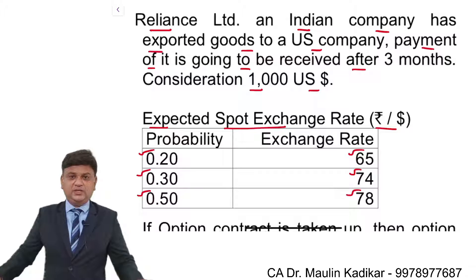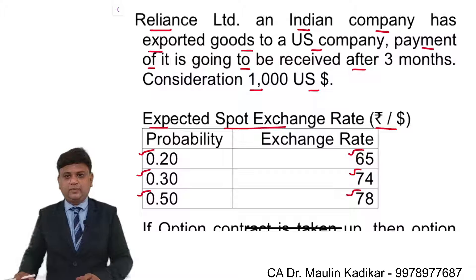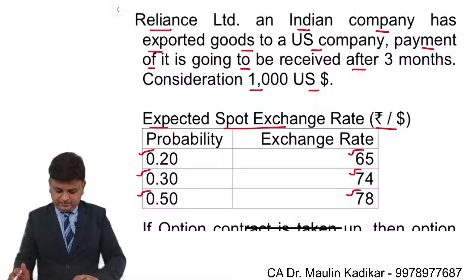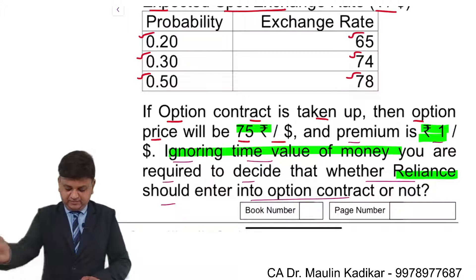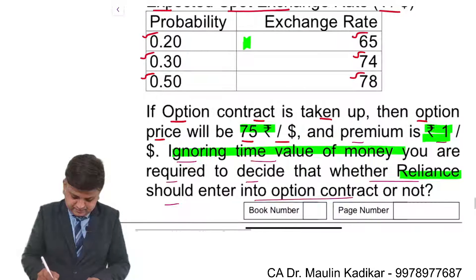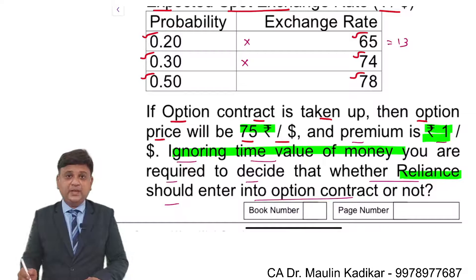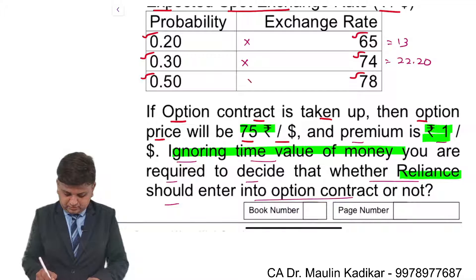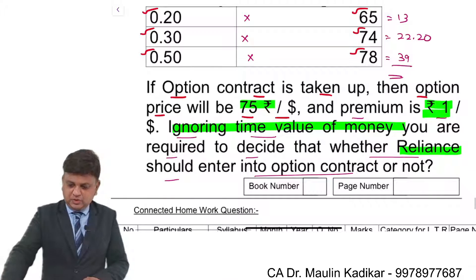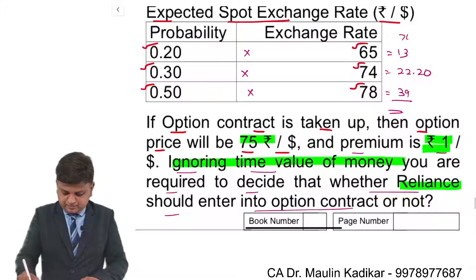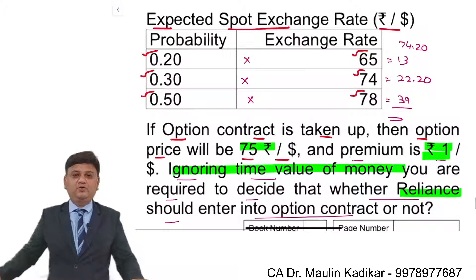I request you to post your answer before I reveal it. Now, using your calculator: there are 20% chances the exchange rate is 65, so 0.20 × 65 = 13. Then 0.30 × 74 = 22.2, and 0.50 × 78 = 39. Overall, 13 + 22.2 + 39 = 74.2. So if we do not enter into the option contract, we are expecting to receive 74.20 rupees per dollar.